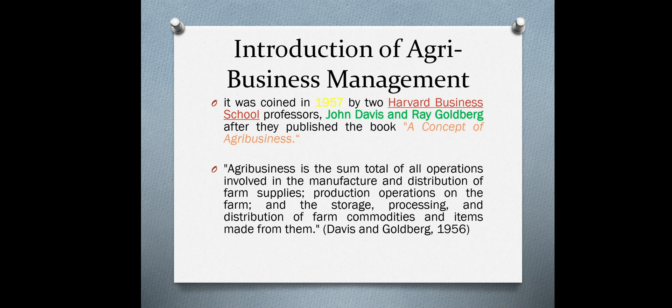Agribusiness includes all the activities and functions of agriculture. It is the sum total of all backward linkages and forward linkages of agriculture. Agribusiness is the sum total of all operations involved in the manufacturing and distribution of farm supplies, production operations on the farm, the storage, processing, and distribution of farm commodities and items made from them. This is the definition given by Davis and Goldberg.